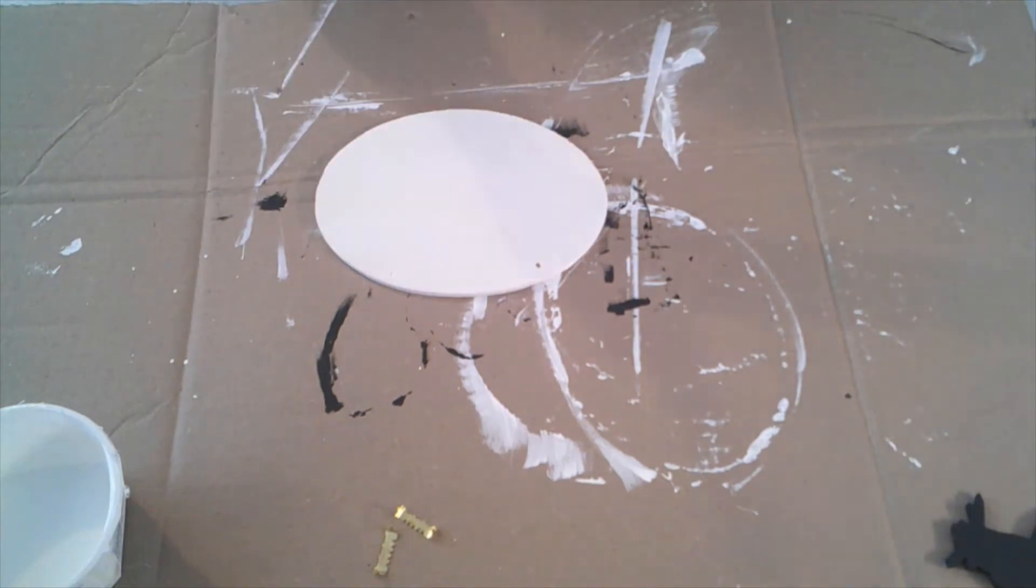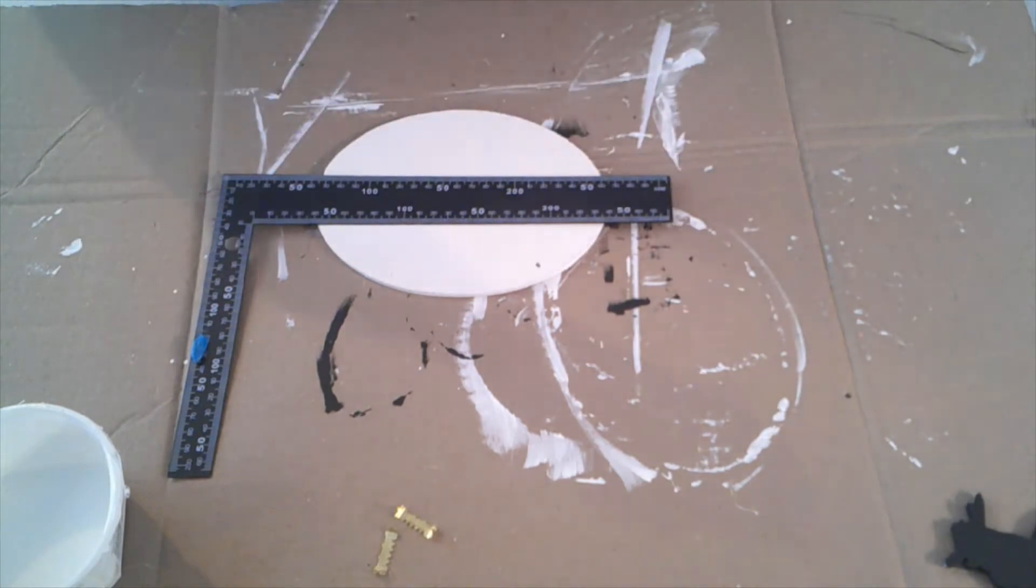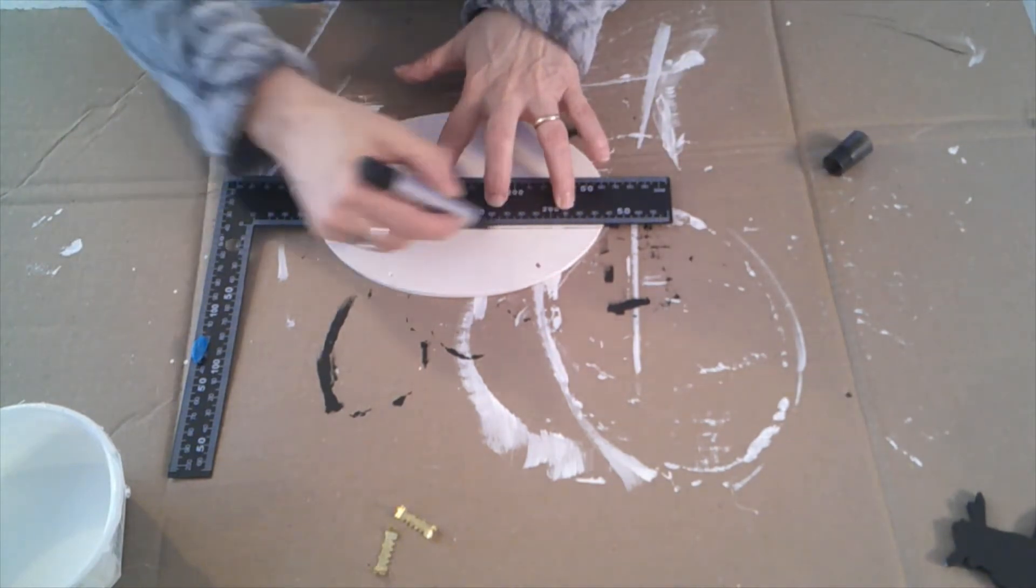Once the oval part was dry I used a black Arteza paint marker and I put lines through that oval because I wanted it to look shiplapped.